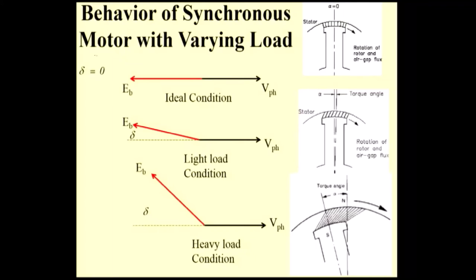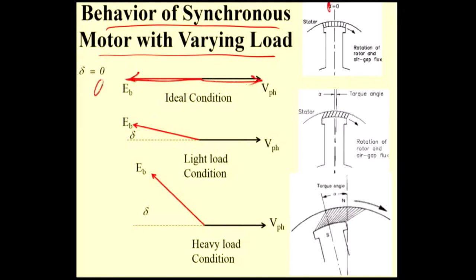Behavior of the synchronous motor with varying load. If you understand this, it is very easy. At the time of no load, assume ideal case: no load condition, the delta equals zero. So, V phase and Eb phase are aligned, delta equal to zero.